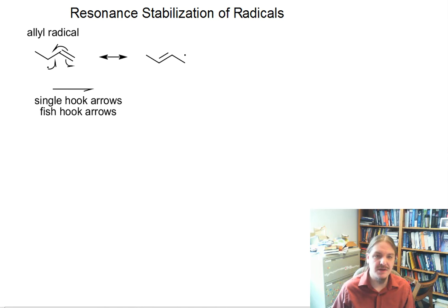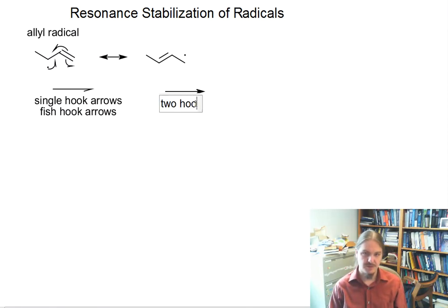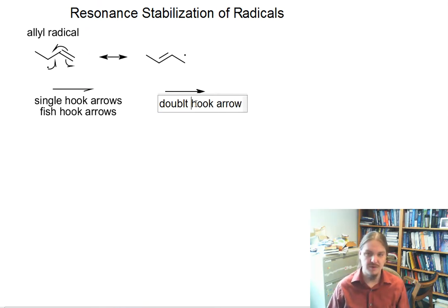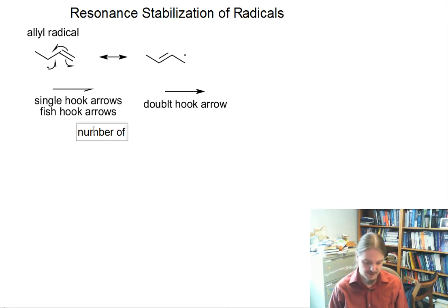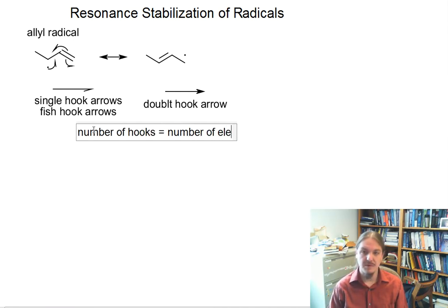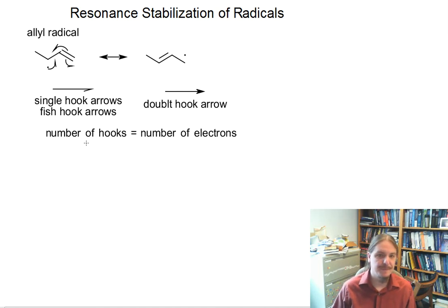This is in contrast to the type of arrow used for an ionic process — a double-hook arrow, which has two hooks. It turns out that this is not random; it is well thought out. The number of hooks on the arrow is equal to the number of electrons that are moving.